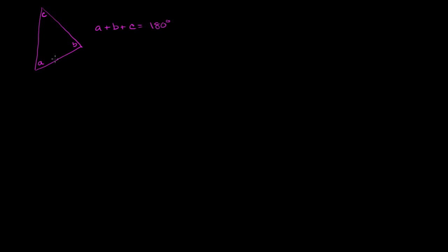But what happens when we have polygons with more than three sides? So let's try the case where we have a four-sided polygon, a quadrilateral. And I'm going to make it irregular, just to show that whatever we do here probably applies to any quadrilateral with four sides, not just things that have right angles and parallel lines and all the rest.